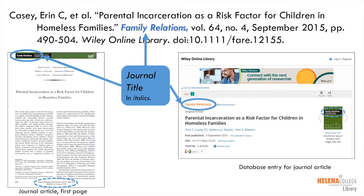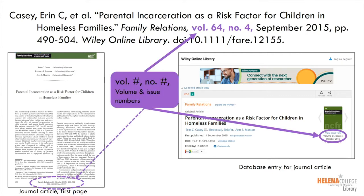Next, type the title of the journal in italics in title-style capitalization, followed by a comma. Find the journal title near the top or bottom of the article. The volume and issue numbers are usually found near the journal title or the date of publication. In this example, the article only shows the volume number, so we need to look at the database entry to find the issue number.